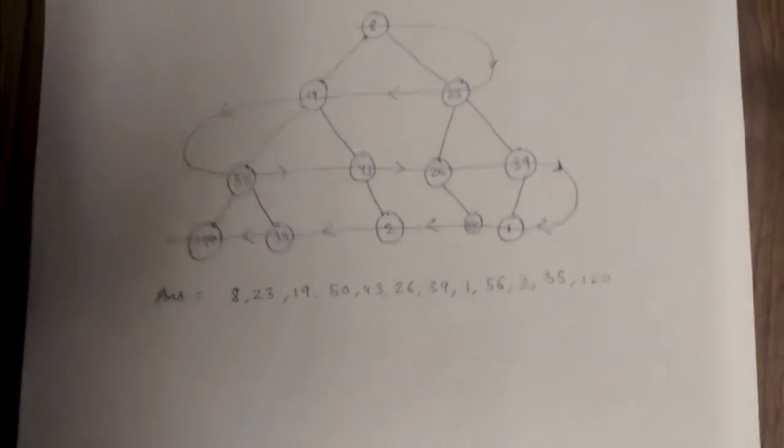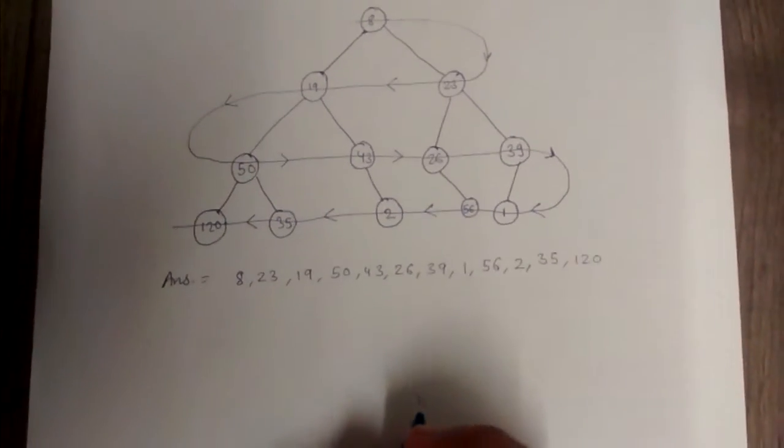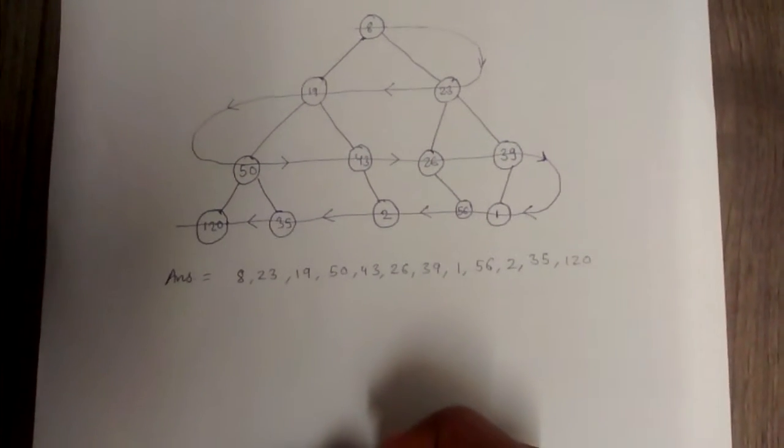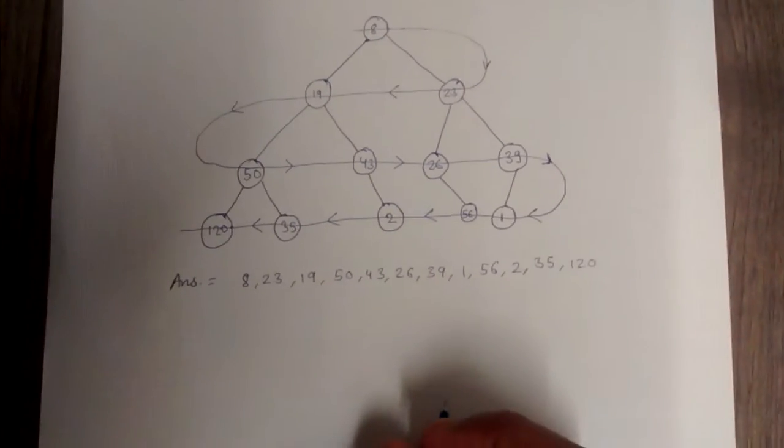So how will we do a spiral order traversal without using recursion? Let's see that.